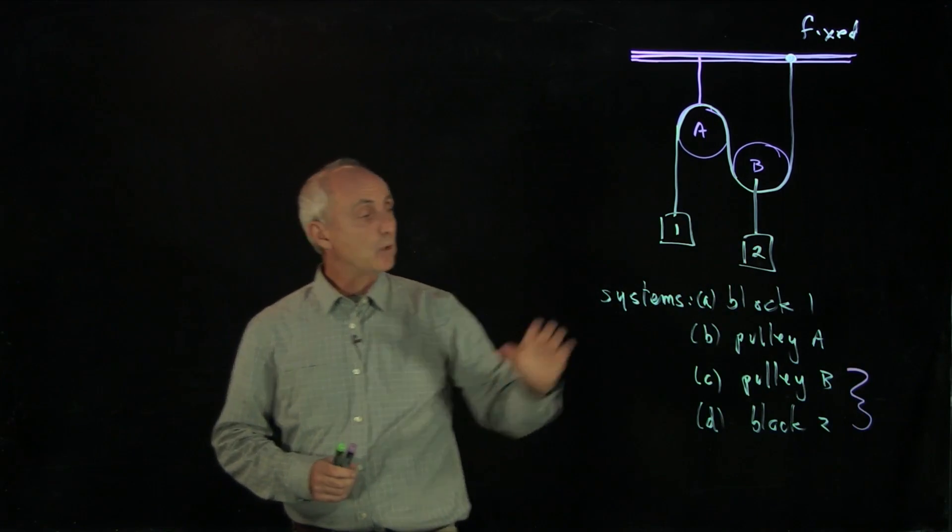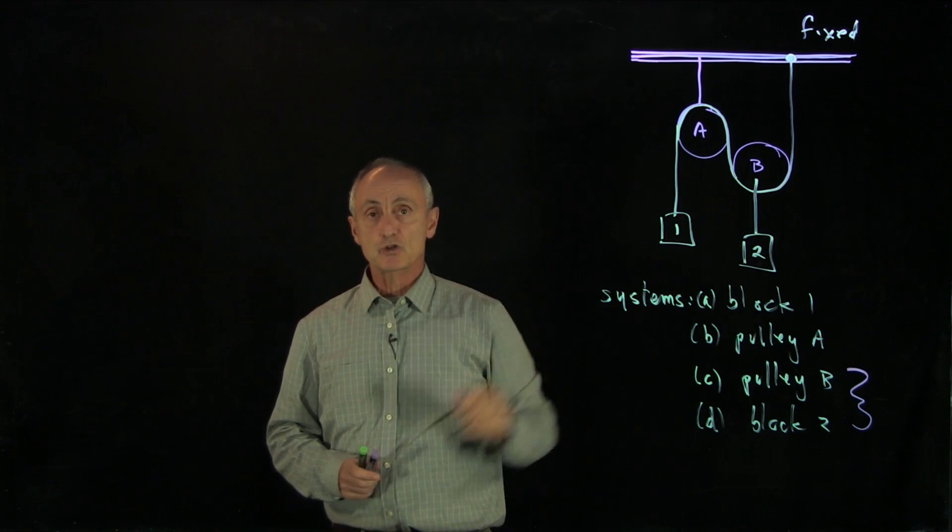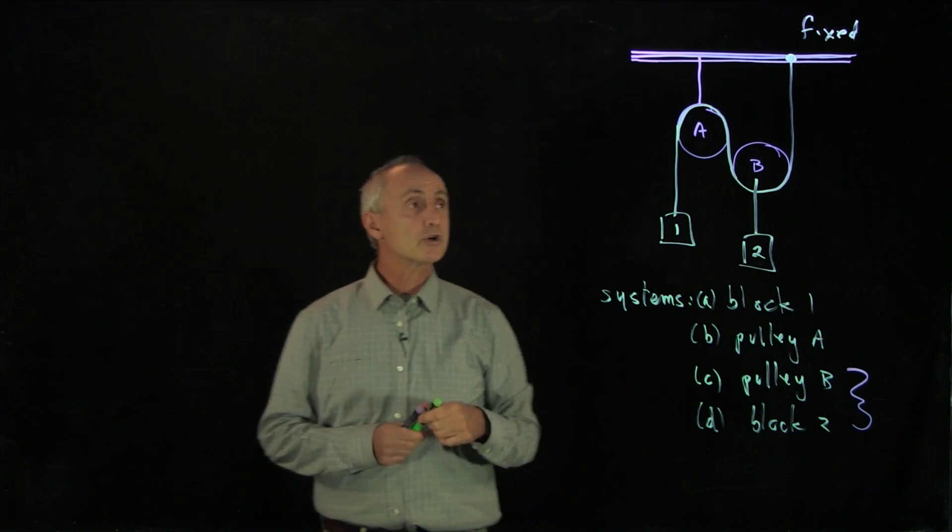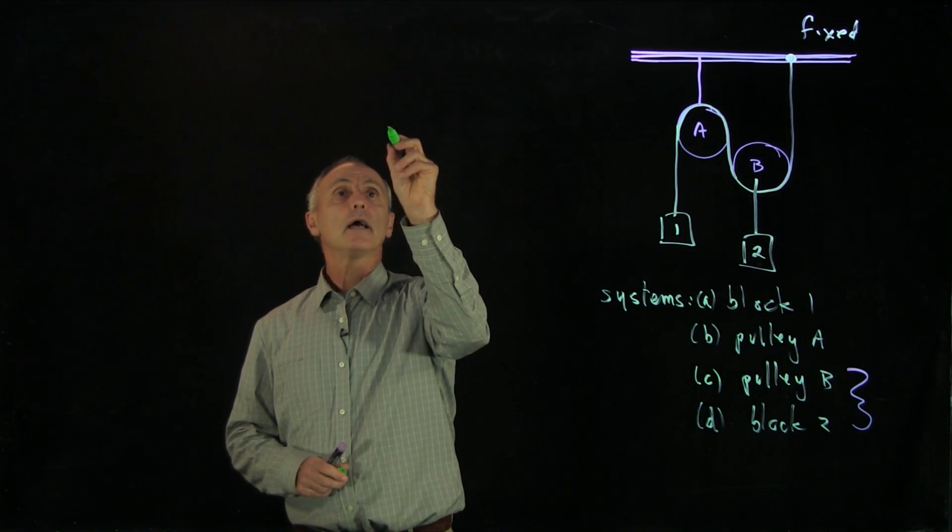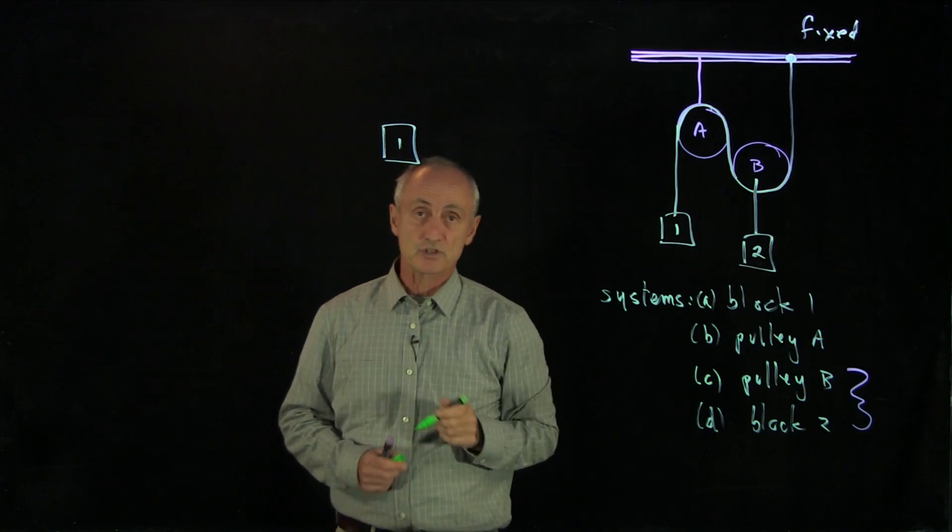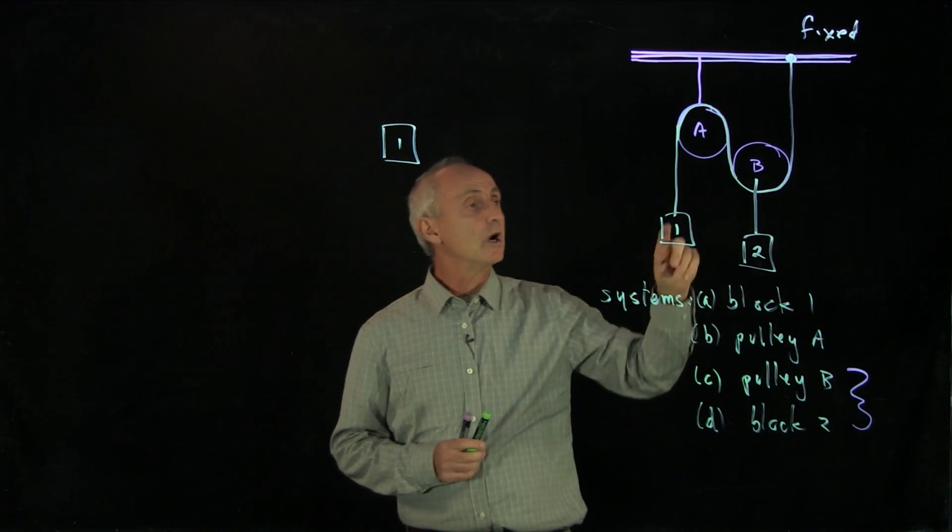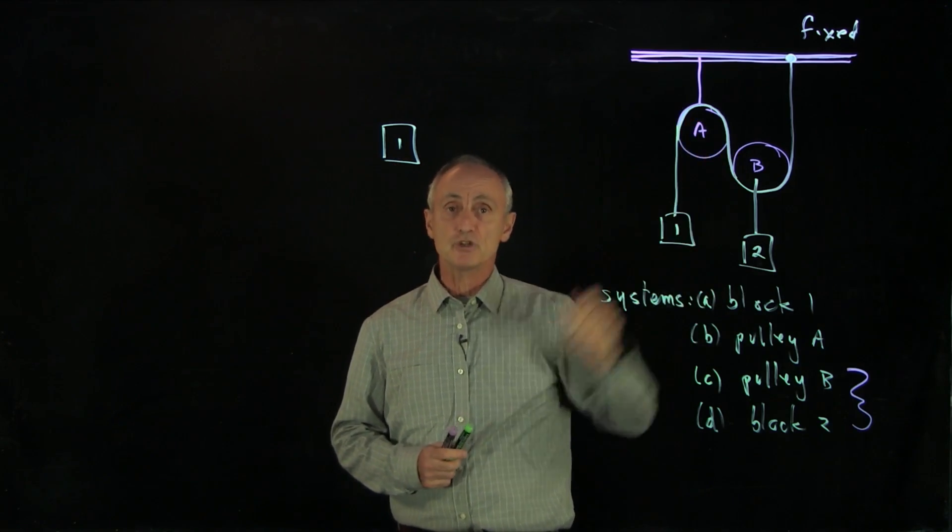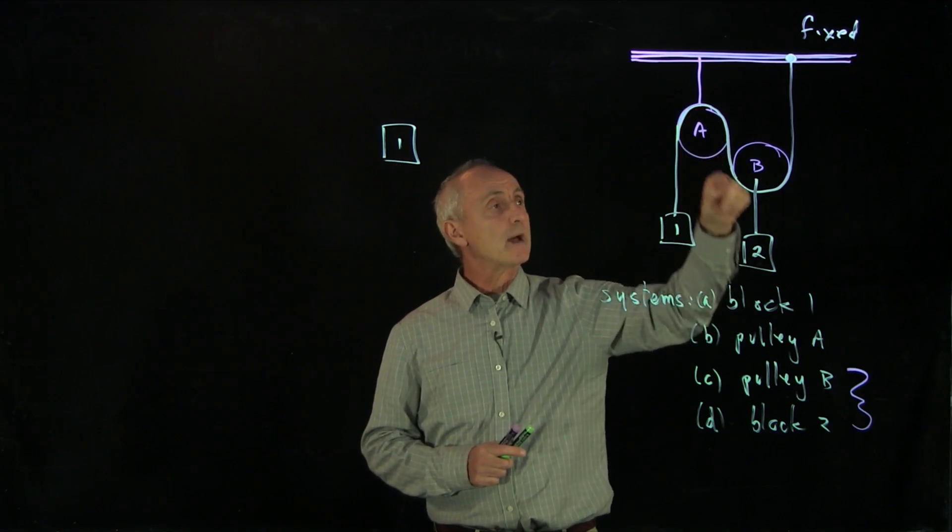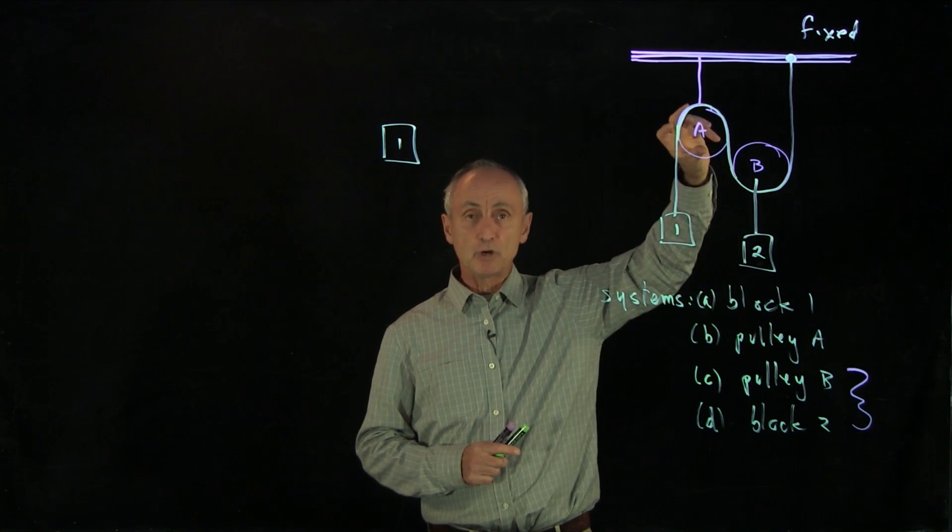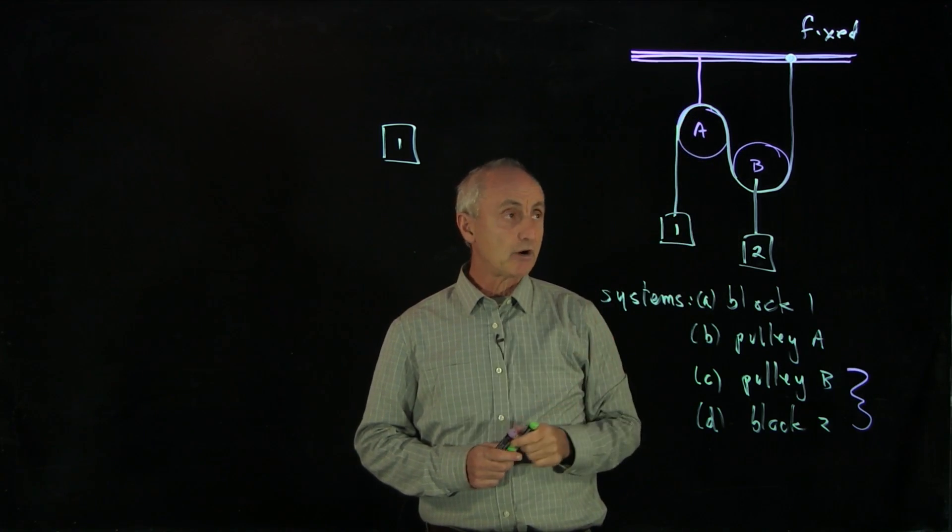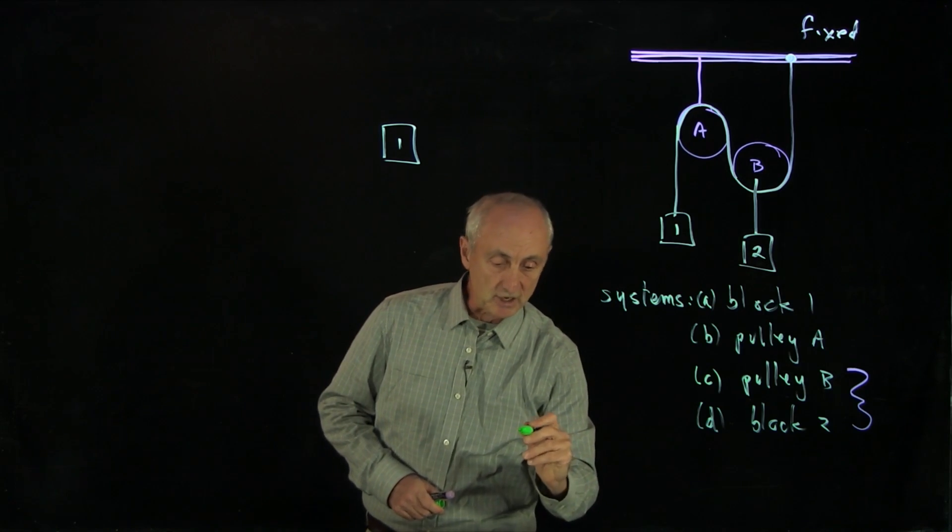The next step is, once we've identified our object, is to draw free body force diagrams for each of the objects. In order to do that, let's start with object 1. We want to consider the forces on object 1. That brings us to our first issue about what types of assumptions we're making in our system.